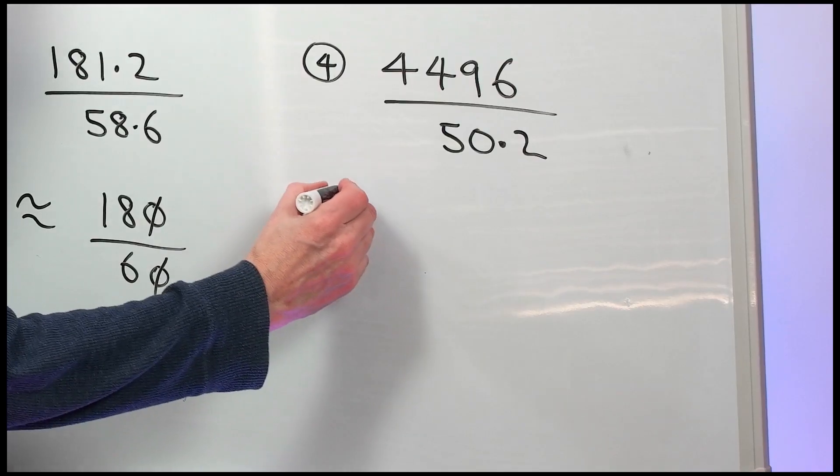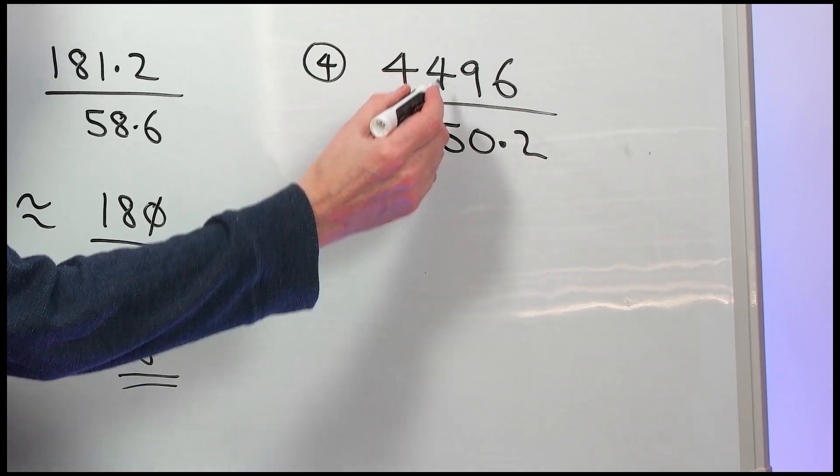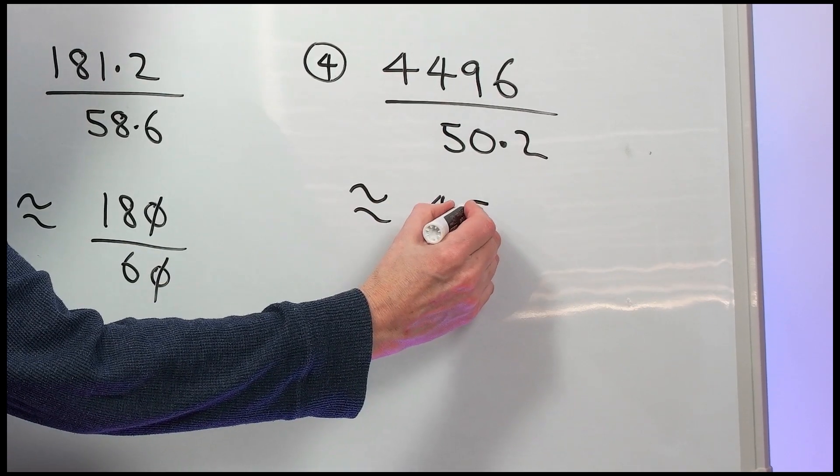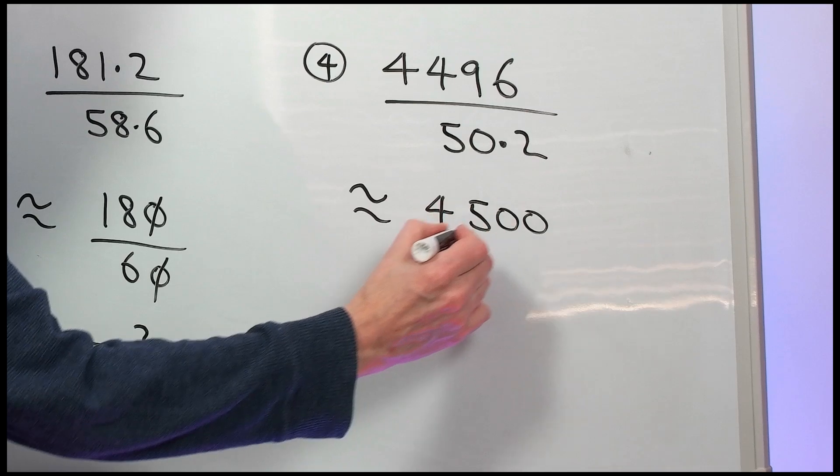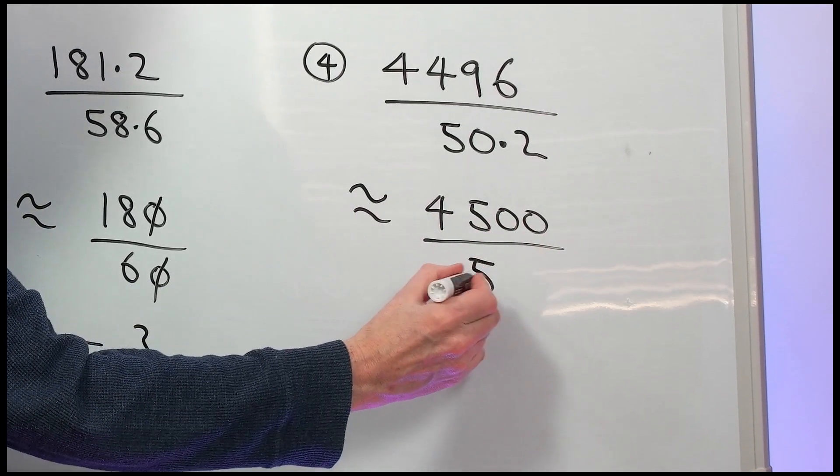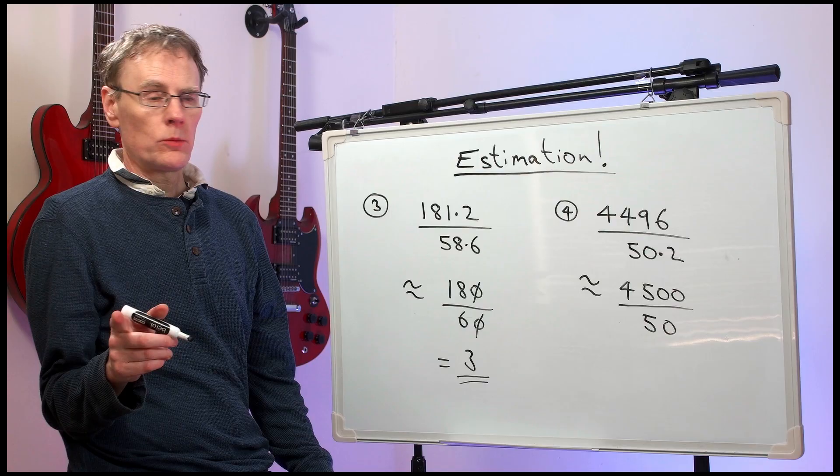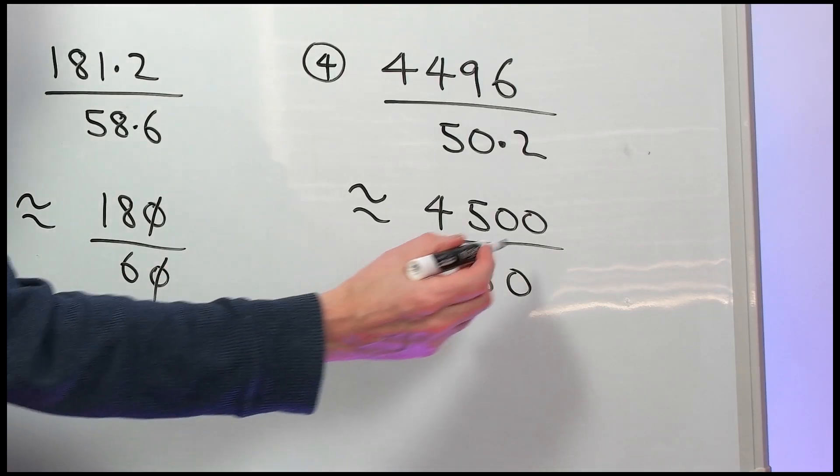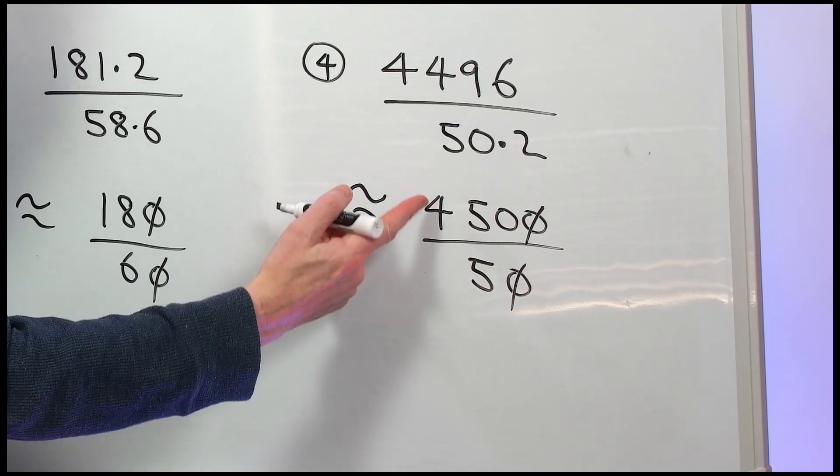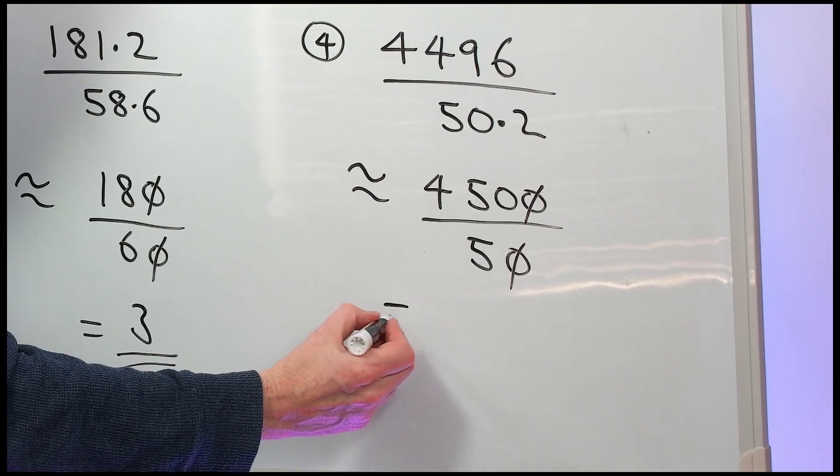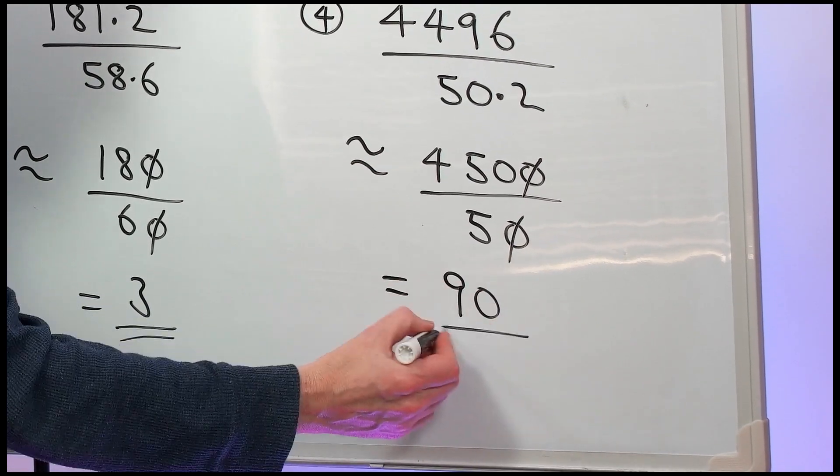Number 4. So that's approximately 4,500 divided by 50. Now we can cancel that down. We can divide the top and the bottom by 10. Now 45 divided by 5 would be 9. So the answer is 90.